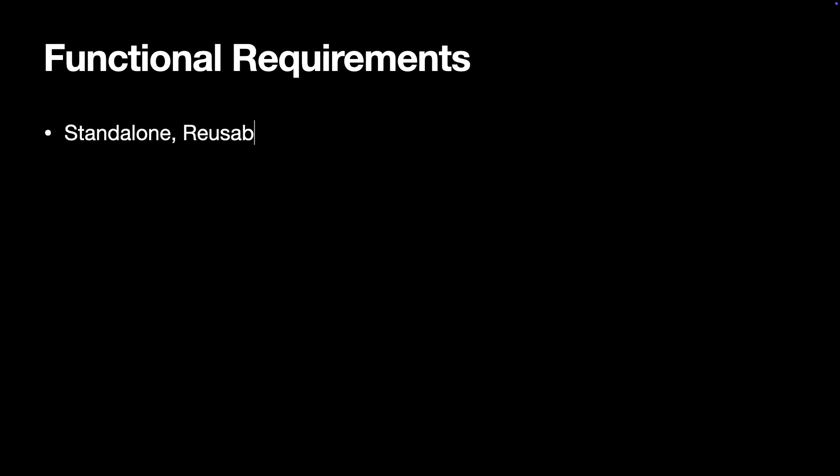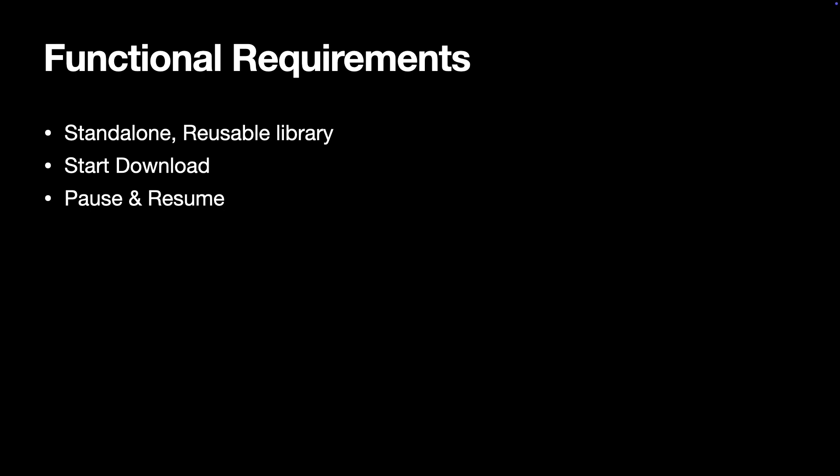Let's dive in. We start with the functional requirements for the file downloader. First of all, it should be a standalone, reusable library you can drop right into any iOS or Android project. We're not talking about UI here, because we assume that this library would be integrated into other apps. Next, we should be able to start a new file download from a source URL to a destination path. On top of that, we want to be able to pause an active download, preserving partial data, and then resume it right where we left off.